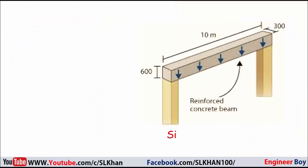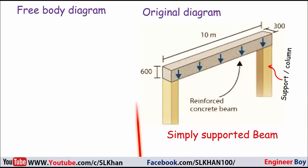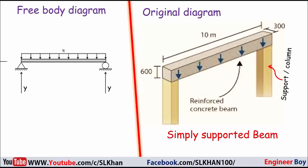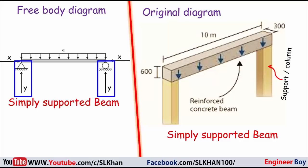When a beam is supported on ends which are free to rotate and having no moment reaction — in short, when a beam has only vertical reactions at its supports — it is known as a simply supported beam. These types of beams are also known as determinate beams because they can be analyzed using only equilibrium equations.